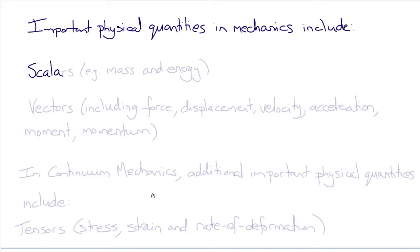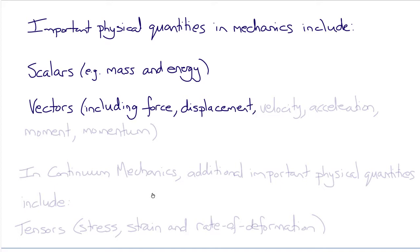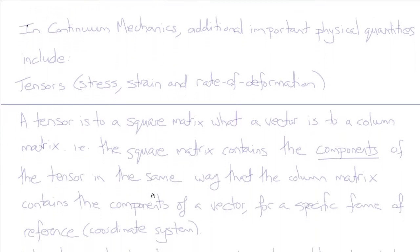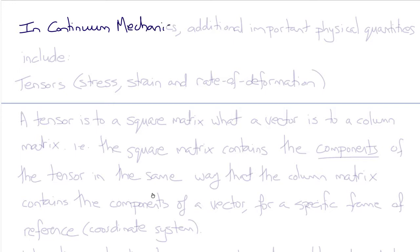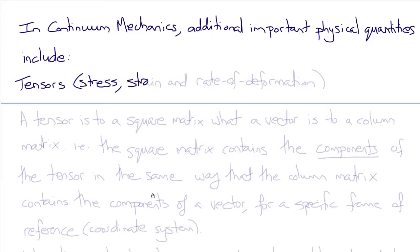Important quantities in mechanics include scalar quantities such as mass, energy, and density; vector quantities including force, displacement, velocity, acceleration, moment, and momentum — these are the quantities used in statics and dynamics. In continuum mechanics, there are additional important physical quantities which are tensors. Properties that are tensors in mechanics include stress, strain, and rate of deformation, among others.